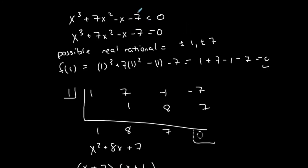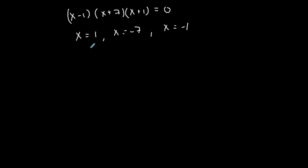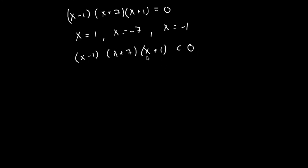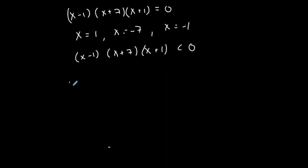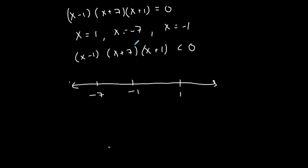Going back to the inequality, the left-hand side must be less than 0. I want all cases that make the left-hand side negative. Placing the boundary points on a number line: −7, then −1, then 1, from least to greatest. Since the inequality says strictly less than (not less than or equal to), these points are not included — I use open circles.